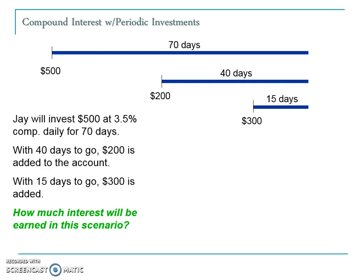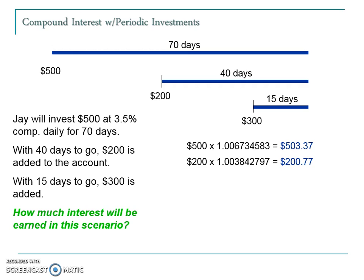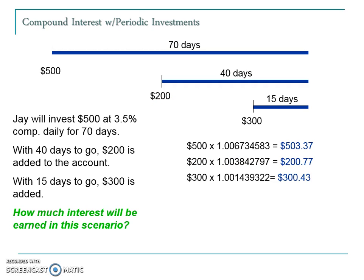We're going to go to the table that shows 3.5% compounded daily — we have a special table for that. We will look for n equal to each one of these particular values. For the first one, our principal is $500; we would look at that table for n equals 70. 30 days into the period, they deposited an additional $200 that's going to compound for 40 days, so we will look up the number in the compounding daily table for 3.5% interest for 40 days and multiply it by the principal deposit of $200. The $300 will only be compounding for 15 days, so we look up the number from the table associated with 15 days and multiply it by the principal amount.